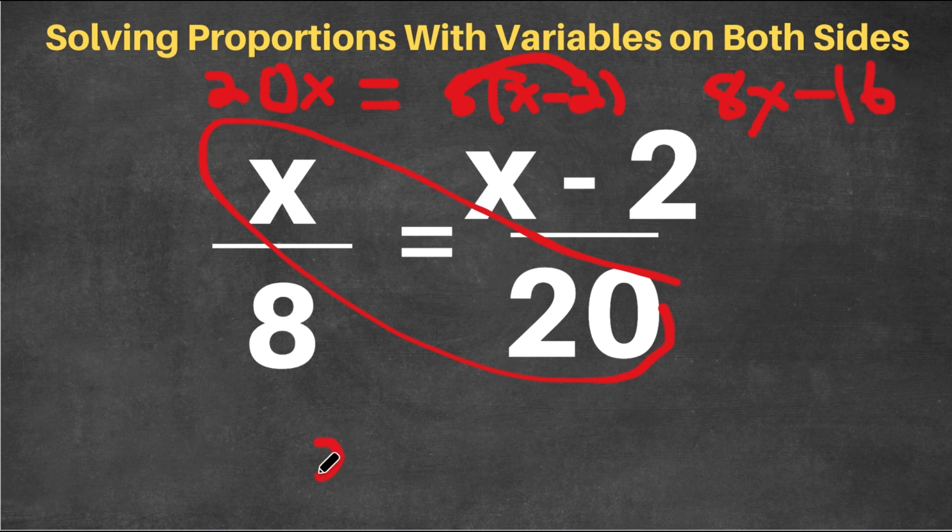Now I'm going to write this down here. So this is 20x. 20x equals 8x minus 16. And now if we subtract 8x from 20x, we get 12x equals negative 16.